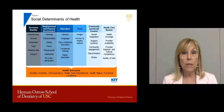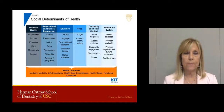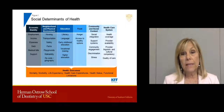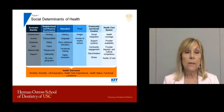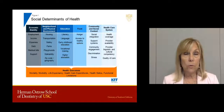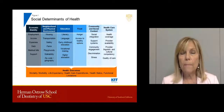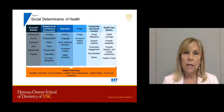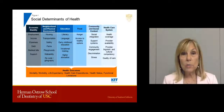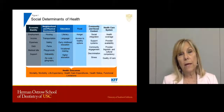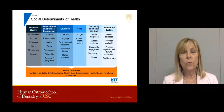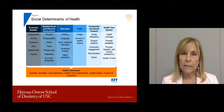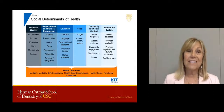All of these social determinants affect health outcomes: mortality — how long a person lives — morbidity and chronic diseases, life expectancy, how much is spent on health care, overall health status, and functional limitations such as disabilities and whether those are adequately addressed.